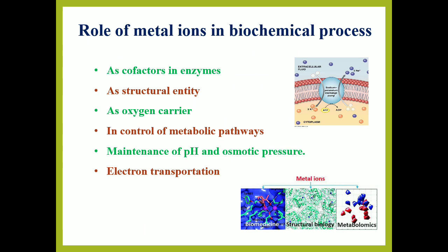Metal ions play different roles in our body. They can act as cofactors for enzymes, so they are required to activate enzymes or help enhance enzyme activity. They act as oxygen carriers or participate in electron transportation. They regulate the pH or osmotic pressure of the body. Metal ions also help in controlling metabolic pathways and play an important role in structural skeleton formation.